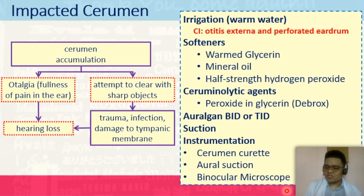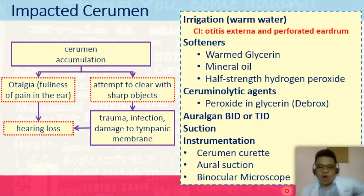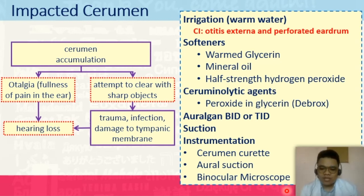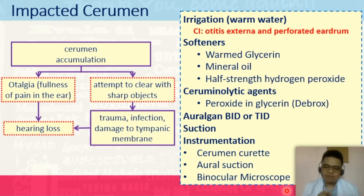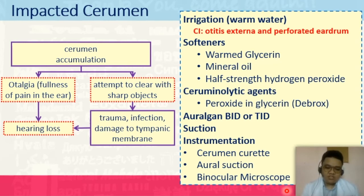What is our intervention? We can do irrigation, but it should be using warm water. However, irrigation is contraindicated among patients with otitis externa and perforated eardrum. If your patient has otitis externa, the warm water could possibly be absorbed on the surfaces of your ear. Recall that water has a different concentration compared to the isotonic substance within our body, so there is a possibility of water transfer or shifting.